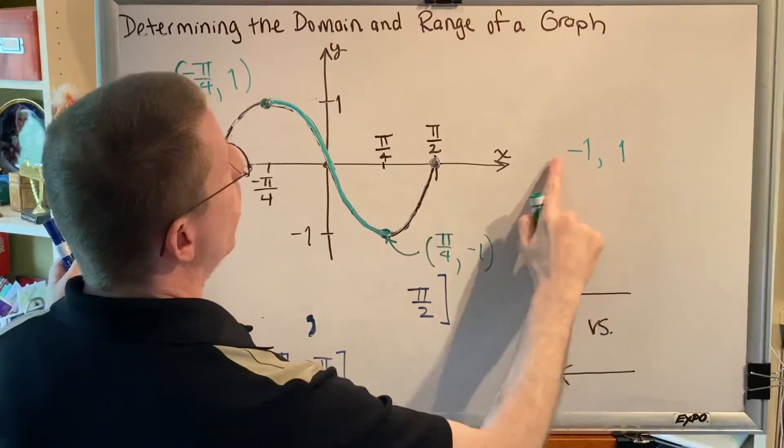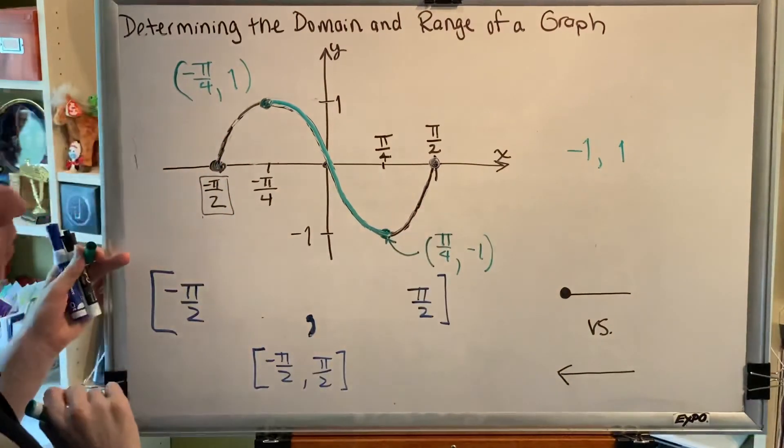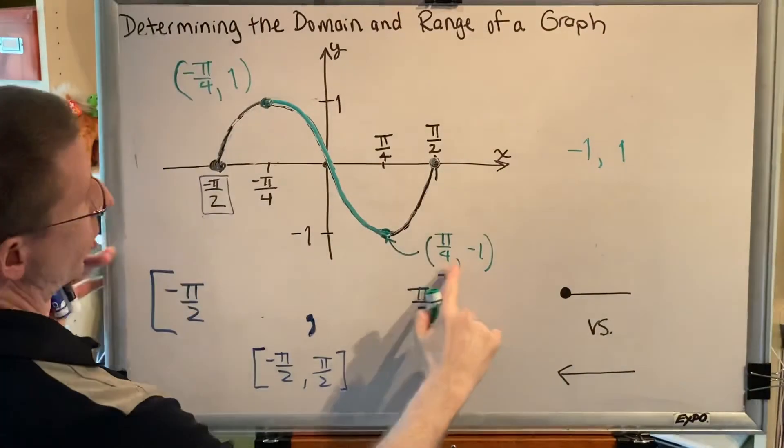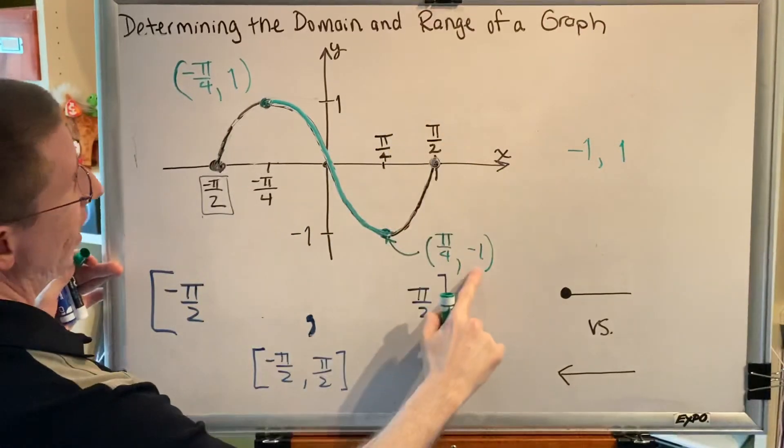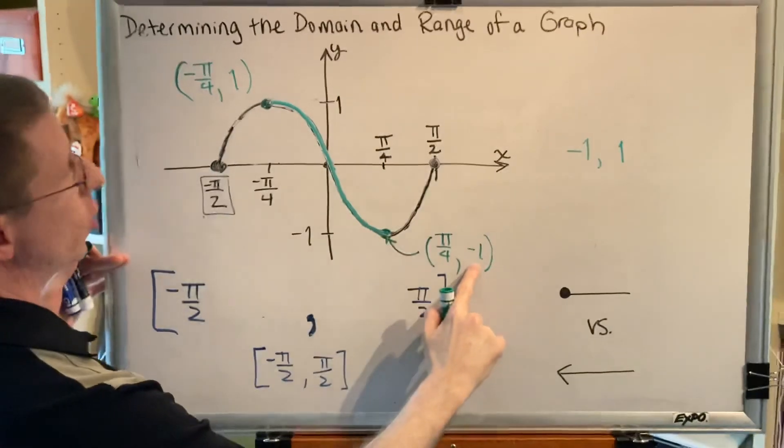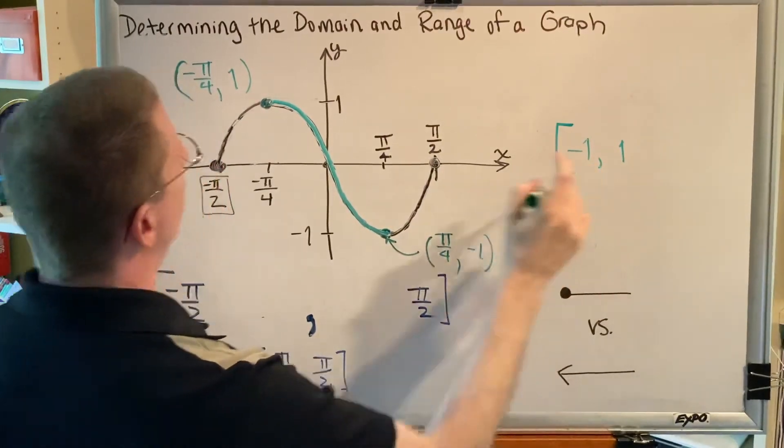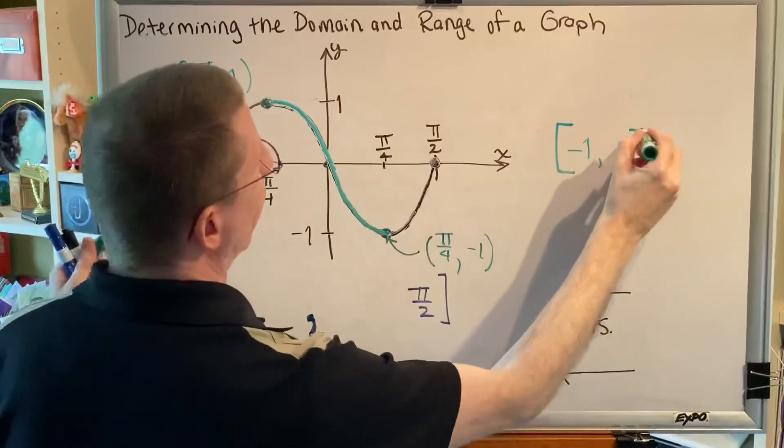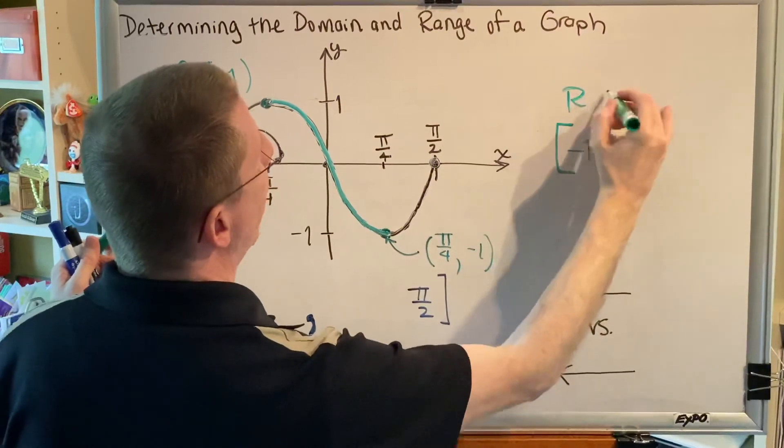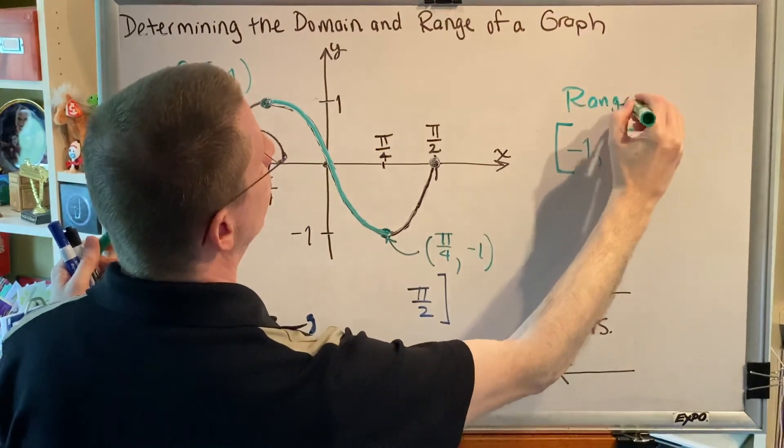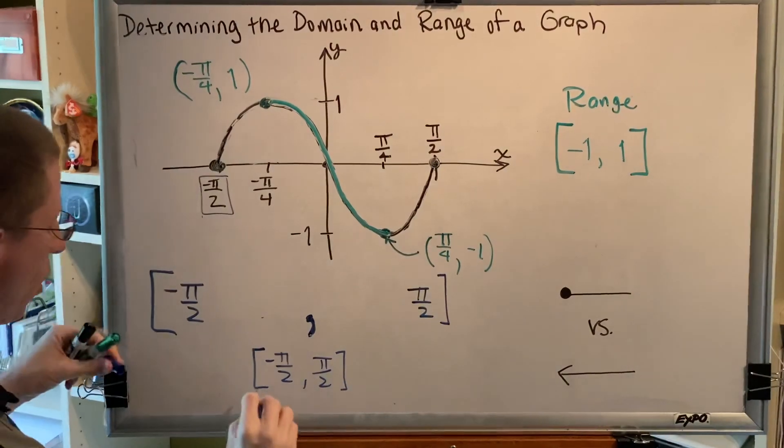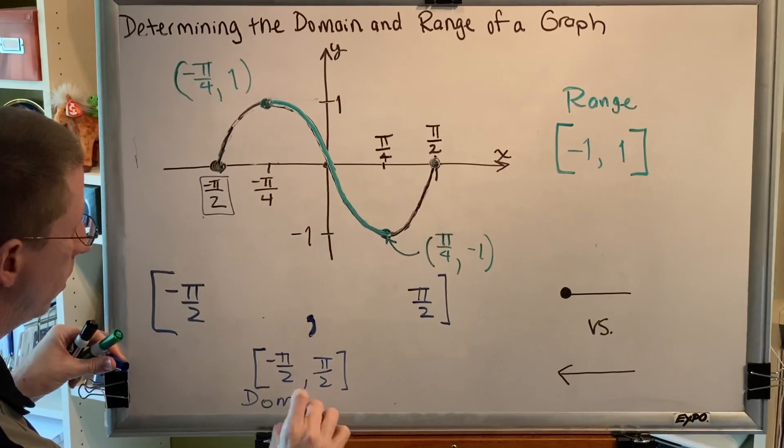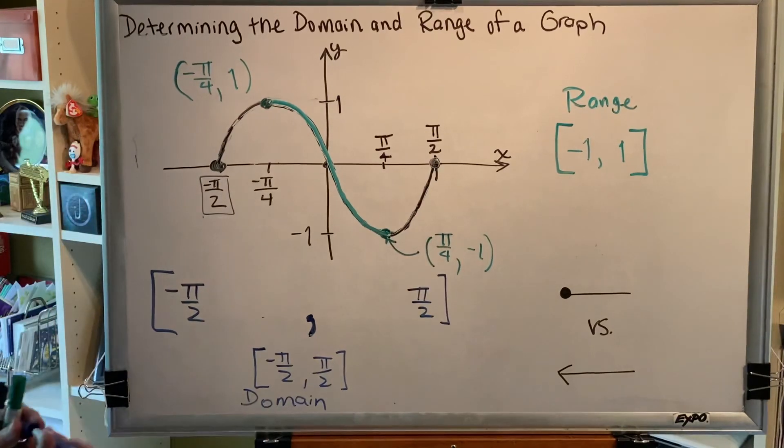And now all we have to decide is what do we put at the ends? Brackets or parentheses? Well, here's a point. It has a y of negative 1. If the range is the collection of all the y's, then it needs to include negative 1 and we need a bracket. Similarly, we need a bracket. So our range is bracket negative 1 comma 1 bracket and our domain is bracket negative pi over 2 comma pi over 2 bracket.